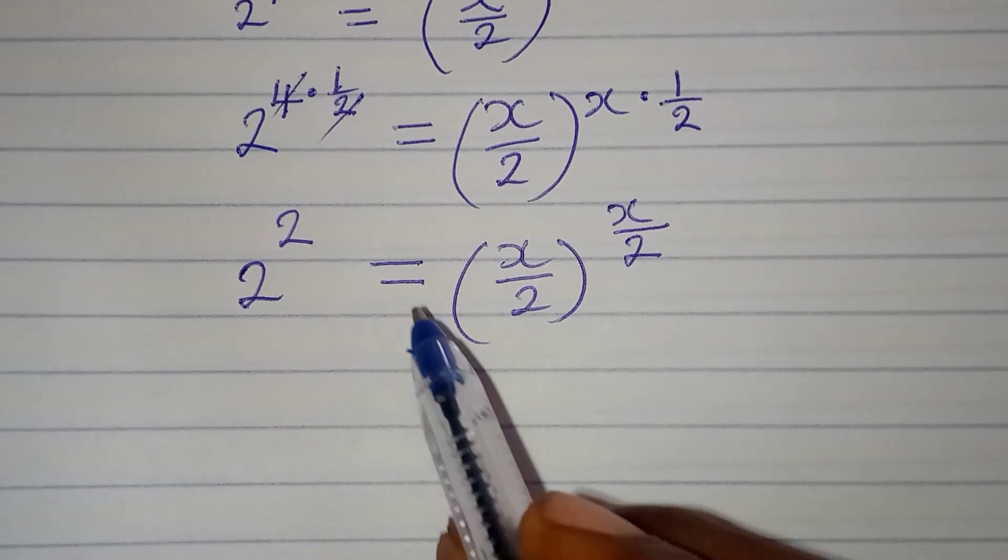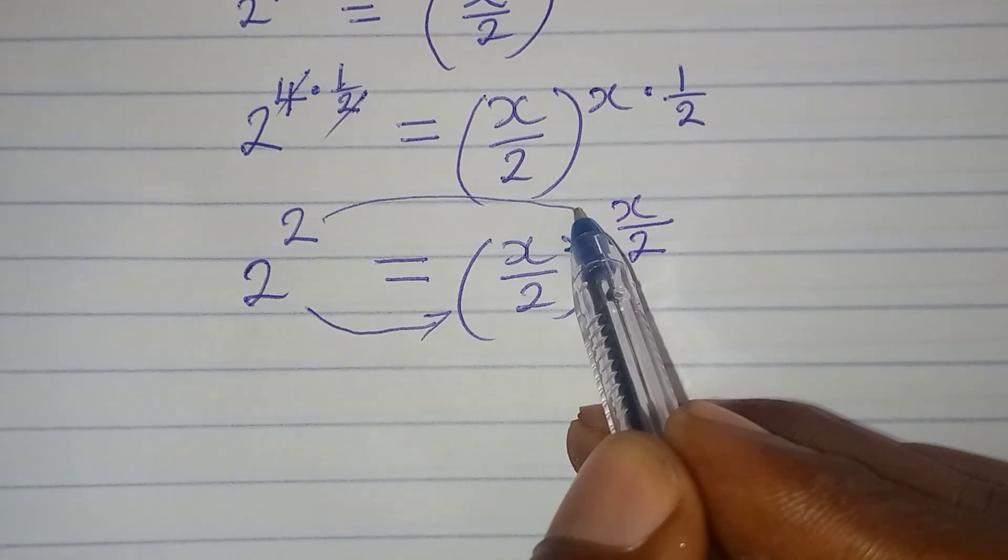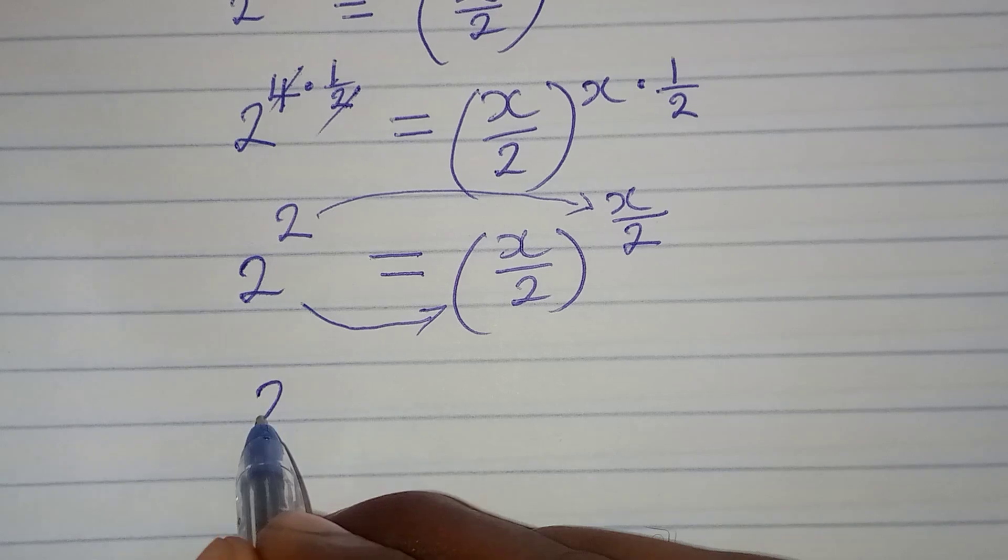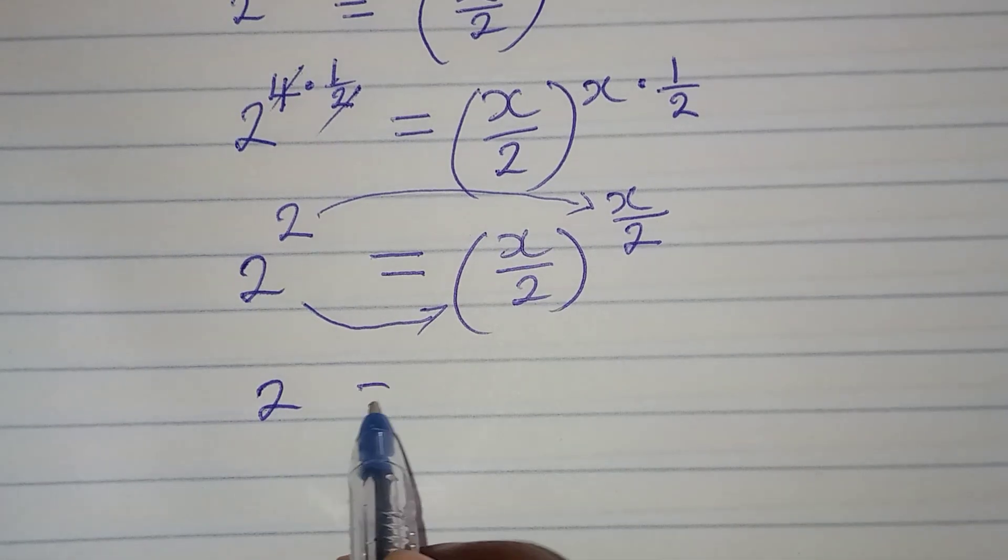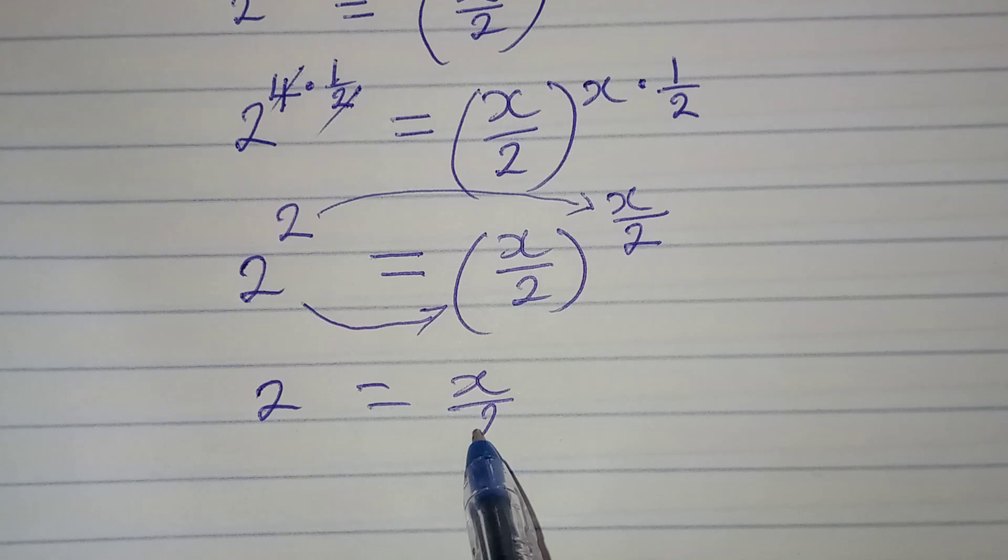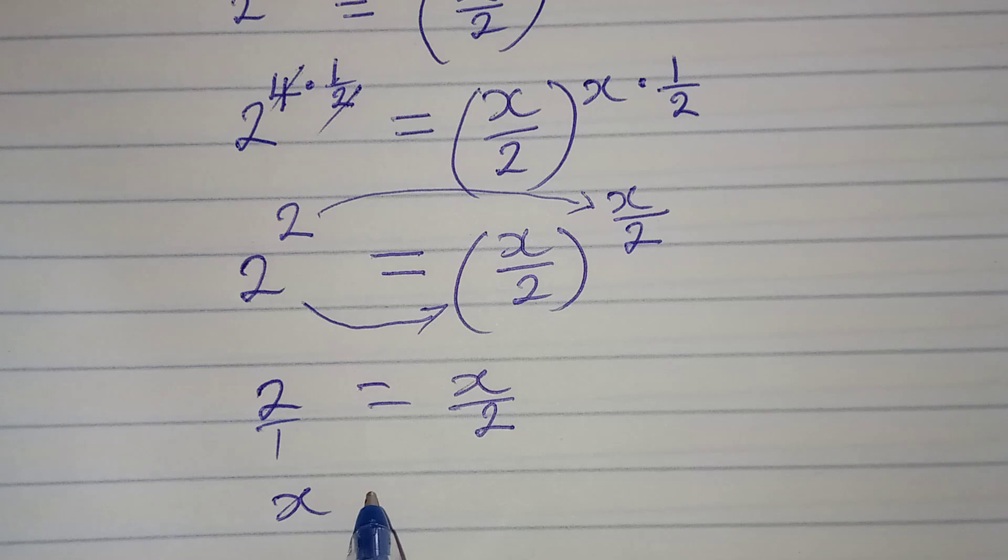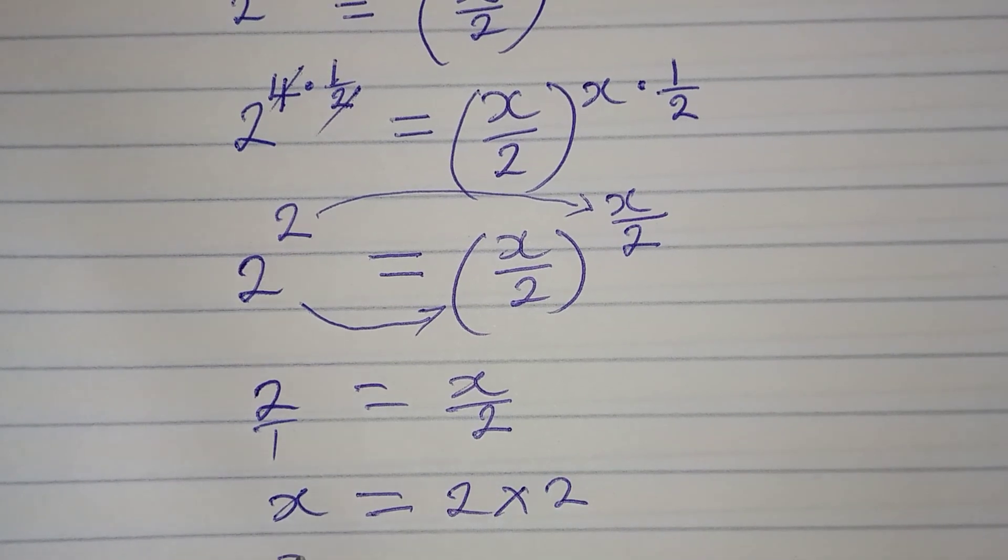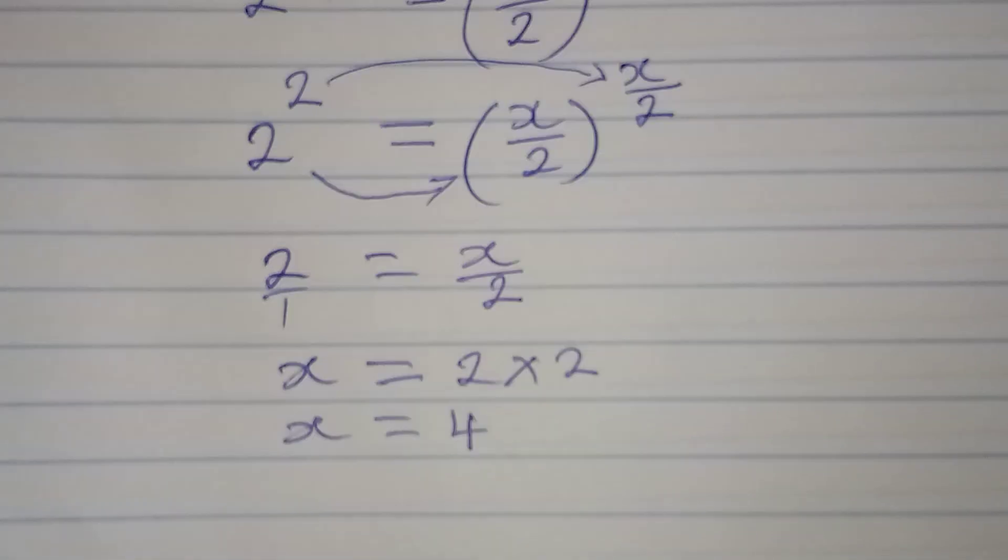And at this point, we will begin to compare. We compare the base and then compare the powers. Now, we understand that 2 - if I am to compare the bases - 2 is equal to x over 2, right? And from here, this is over 1, we can cross-multiply, so that x will be equal to 2 times 2, and x is equal to 4.